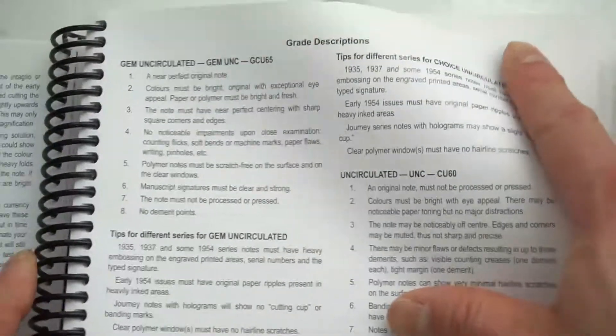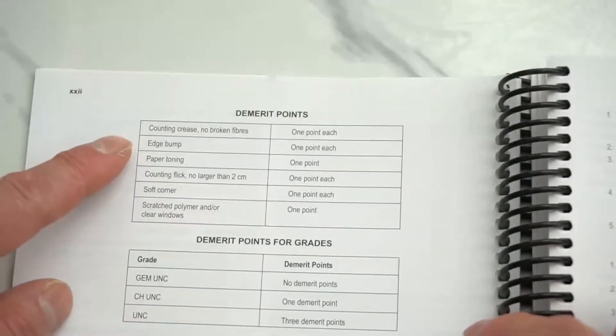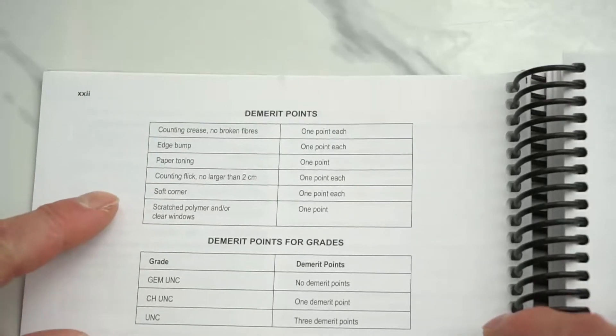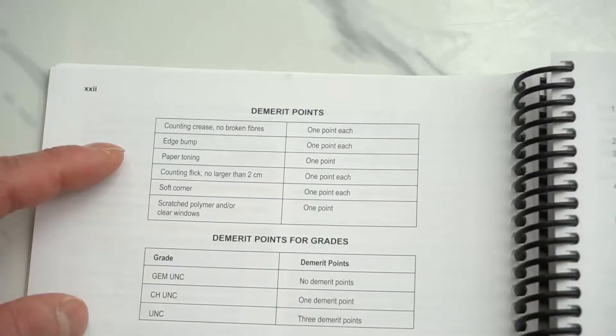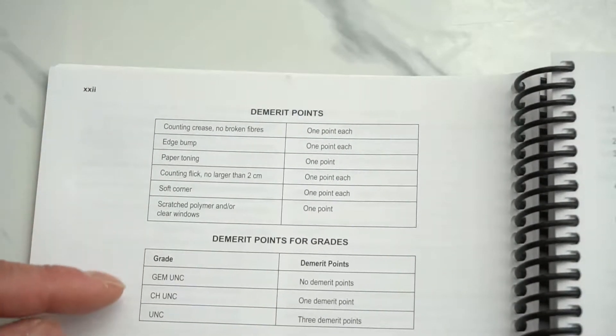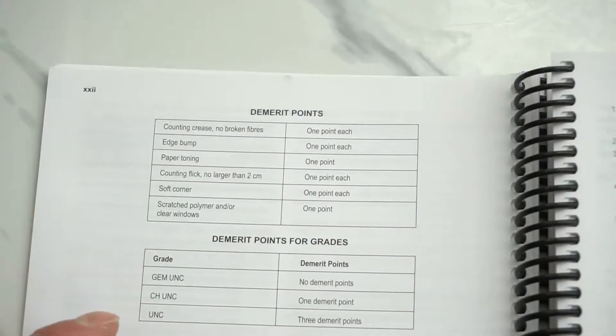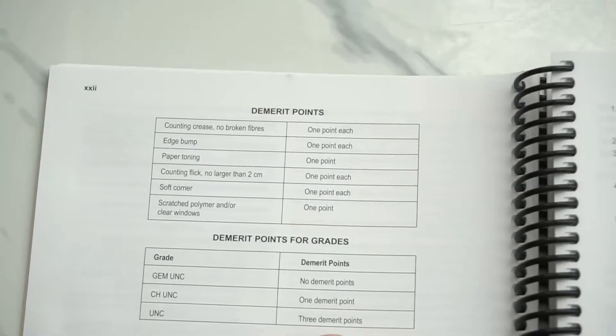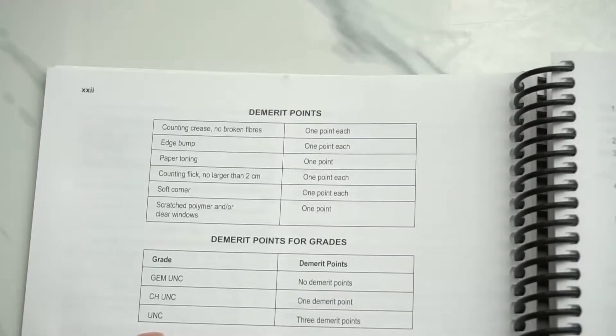Let's flip over the page and see what that means. Here is a demerit points chart. For each flaw on the bill, the points add up. There's a maximum of 3 demerit points to be considered uncirculated.